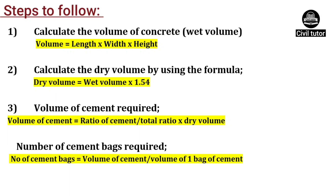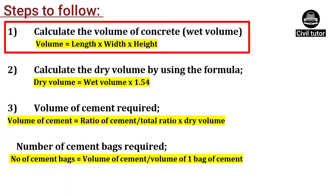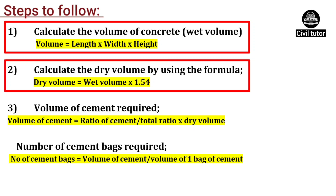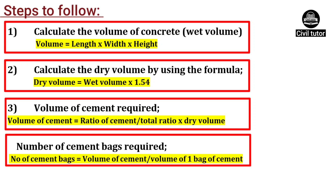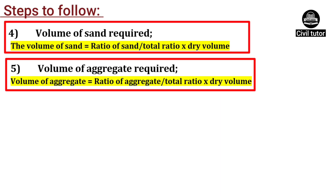In the first step, we will calculate the volume of concrete. The second step will be to calculate the dry volume of concrete using the formula: dry volume equals wet volume multiplied by 1.54. The third step will be to calculate the volume of cement required and the number of cement bags required. The fourth and fifth steps will be to calculate the volume of sand and aggregate respectively.